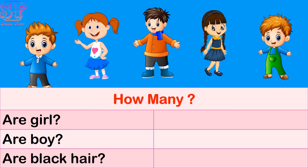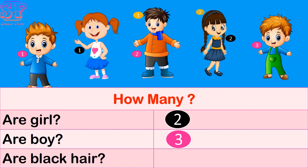Can you see girl? Yes, one, two — two girls. How many are boys? Can you see boy? Yes, one, two, three — three boys. How many are black hair? Can you see? Black hair — yes, one, two — two black hair.